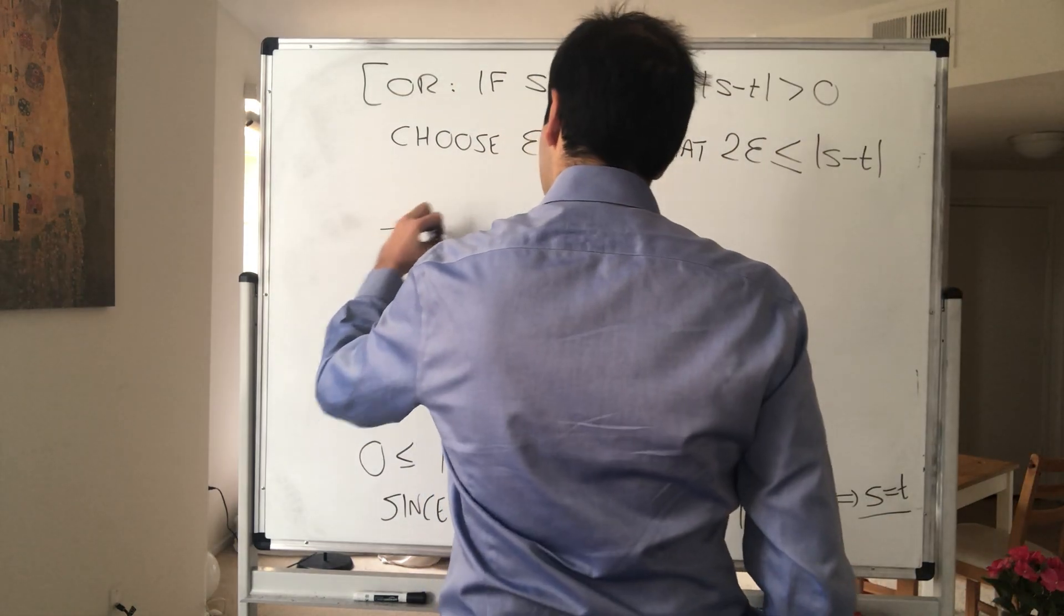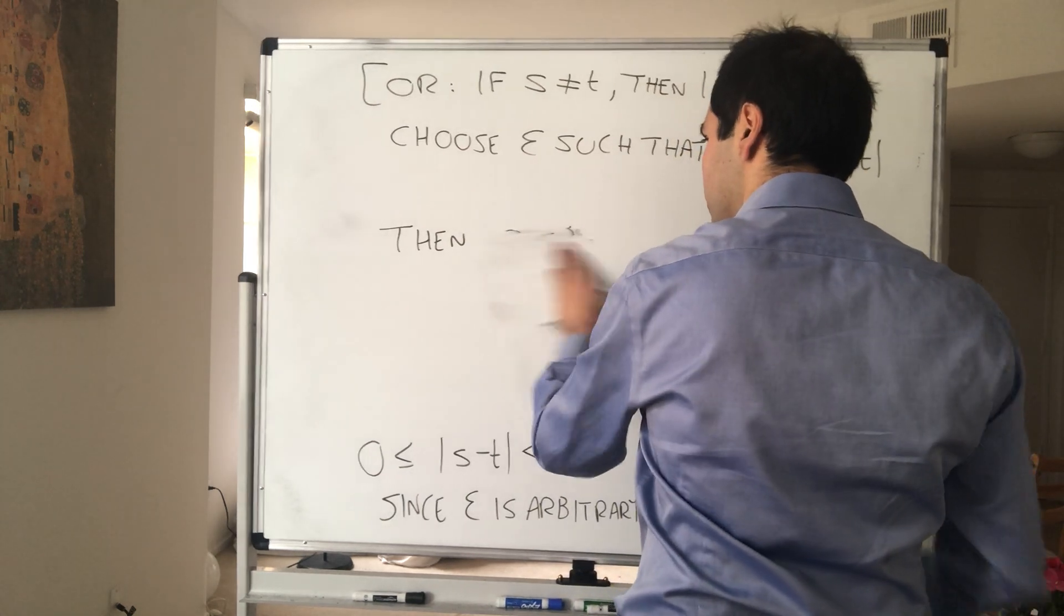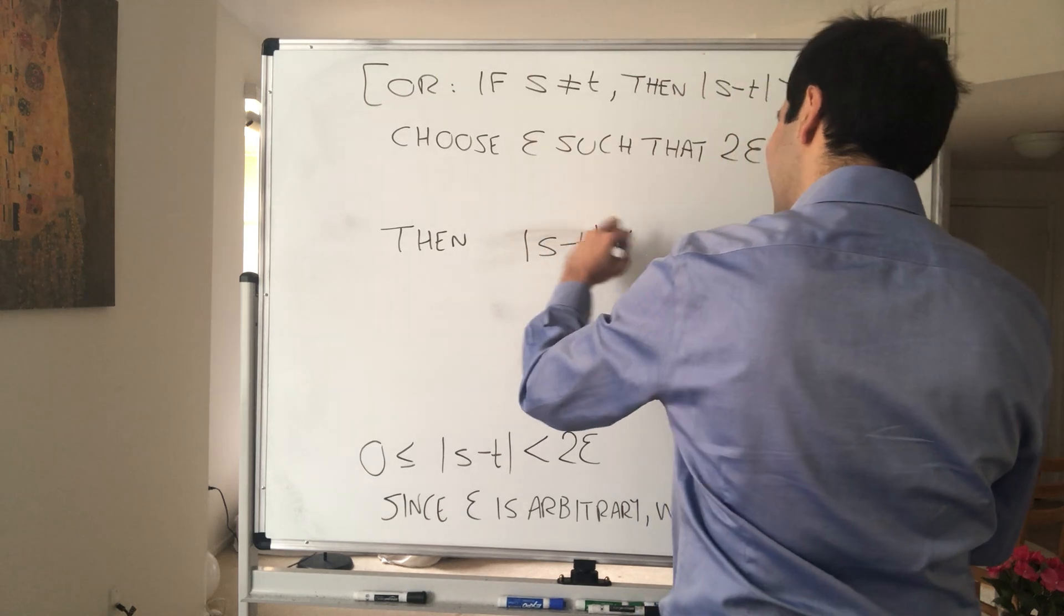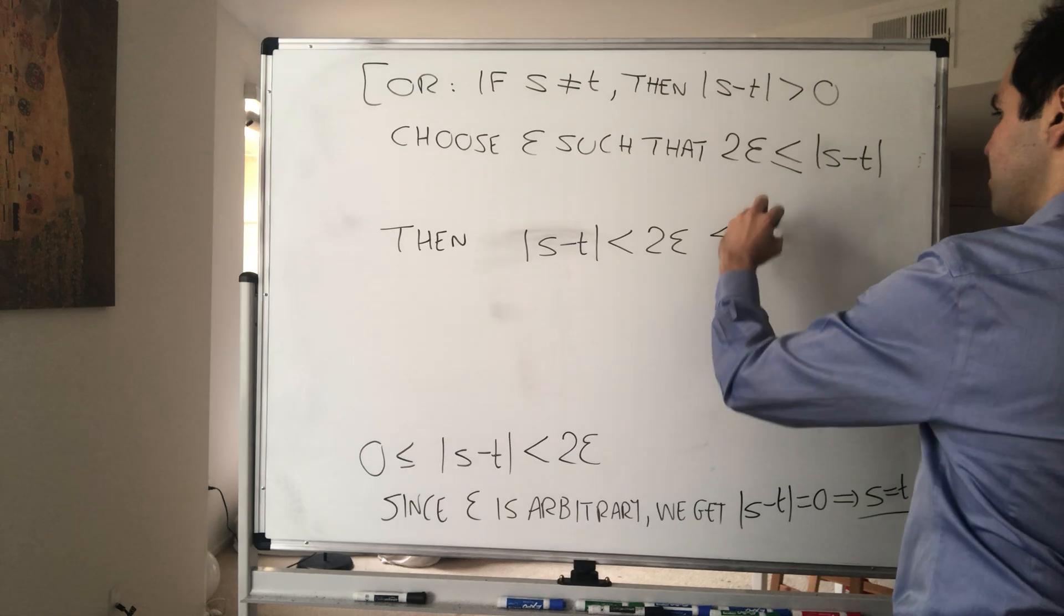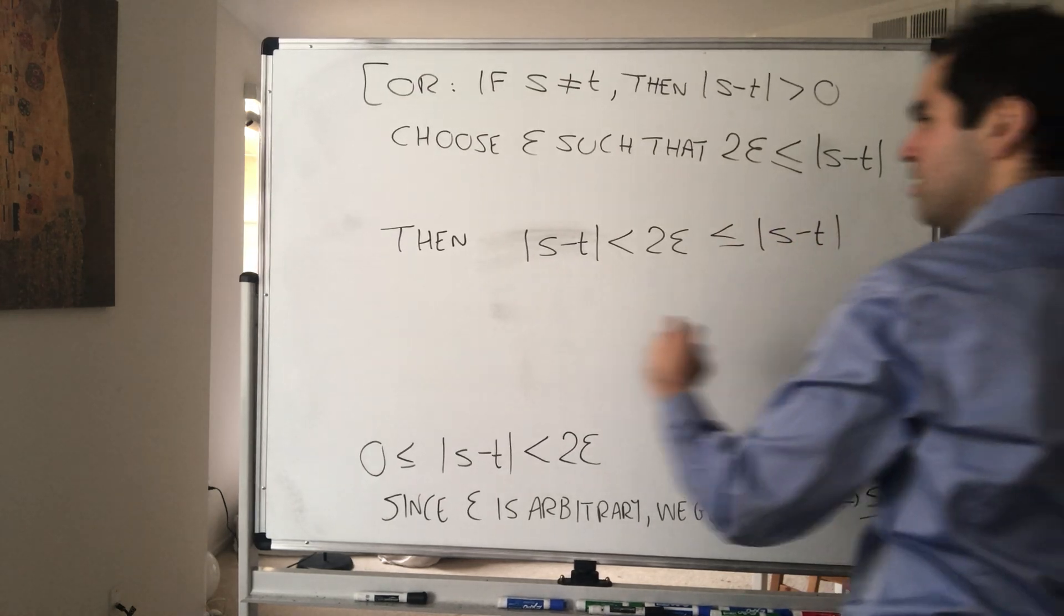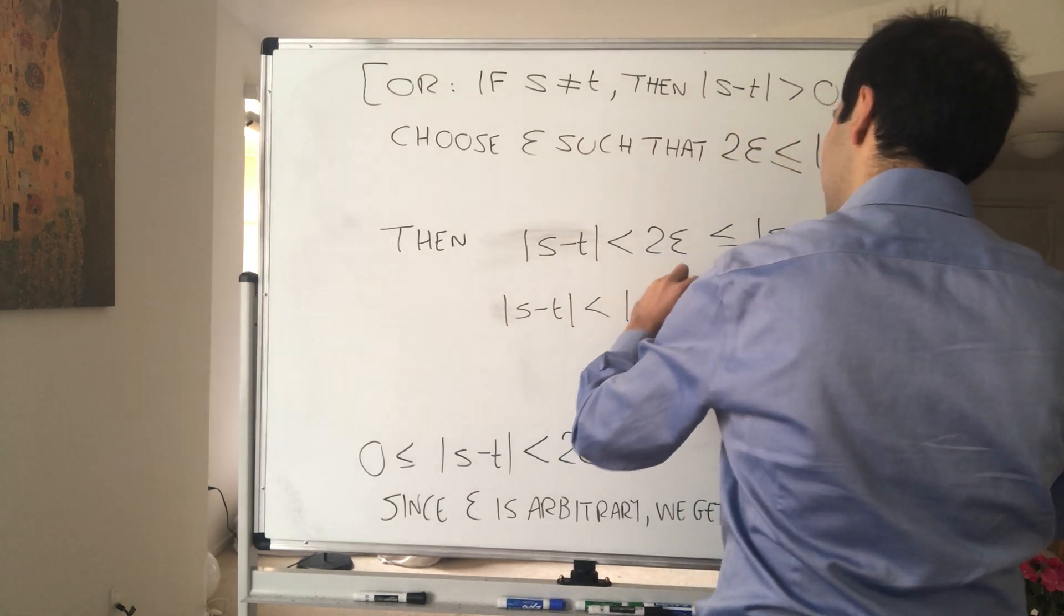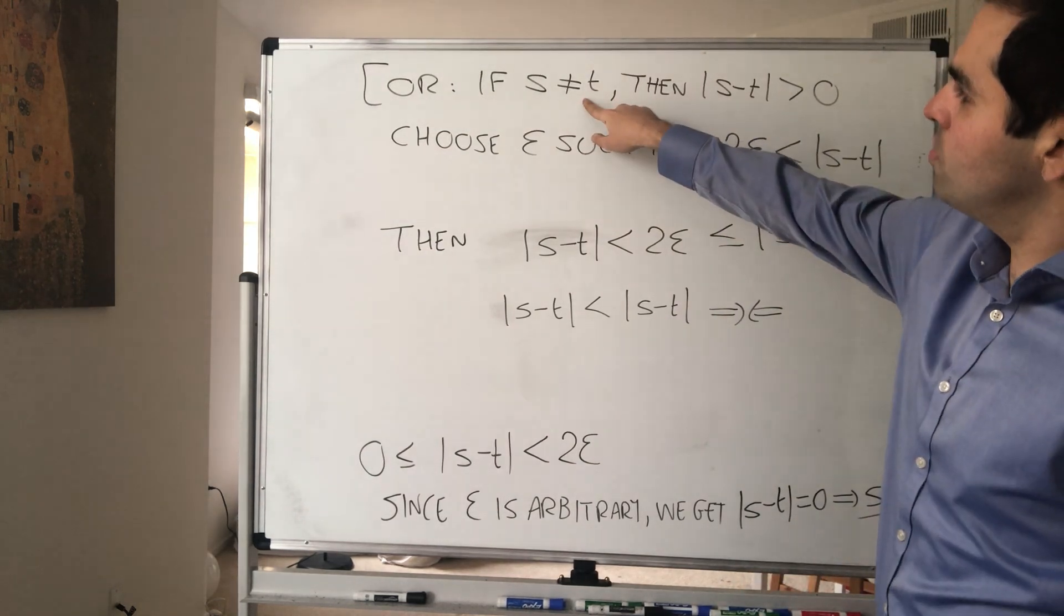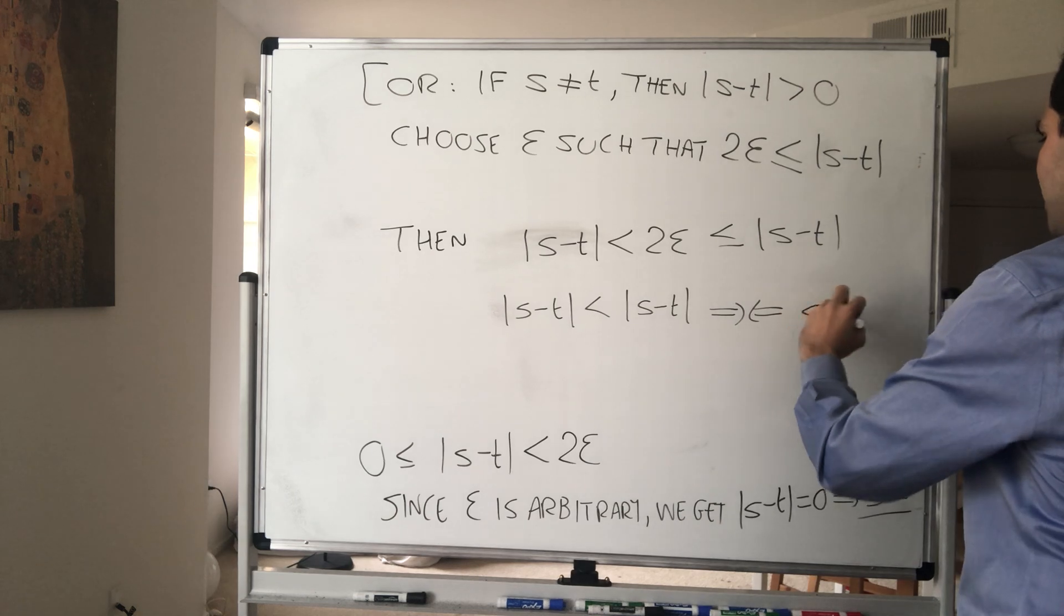Then, what do we have? On the one hand, S minus T, we don't even need this. On the one hand, S minus T, it's less than 2 Epsilon by assumption, but it's also less than or equal to S minus T. So combining this, S minus T is strictly less than S minus T, but it's a contradiction. A contradiction with the fact that S is not equal T, so in fact, S equals T.